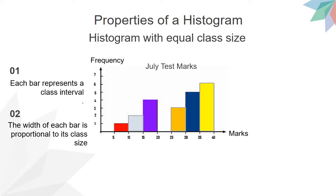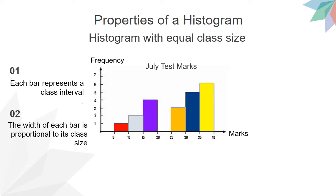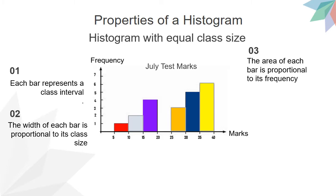The second property: the width of each bar is proportional to each class size. Here, all the class intervals are of size 5 marks. Next, the area of each bar is proportional to its frequency — it is the area of the bar that indicates the frequency for each class interval. In other words, the product of the height with the width of the bar indicates the frequency. This means that the height of the bar does not necessarily indicate the frequency. But for this histogram, since all the class intervals are of the same size, it has been common practice to accept the height of every bar to be the frequency of each class interval.